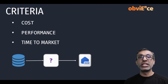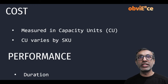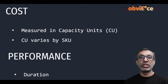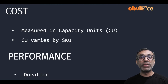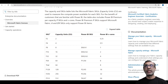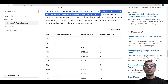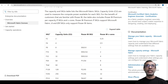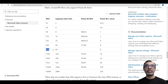When you try to benchmark or evaluate any product, you look at a few key criteria: cost, performance, and time to market. In the world of Microsoft Fabric, cost is measured in capacity units, and capacity units vary by SKU. For example, P1 which is F64 might be different compared to F4 and so forth. Performance is measured in terms of duration — how long a job or activity takes. Microsoft says capacity units measure the compute power available for each SKU. For instance, Trial or F64 or P1 has 64 capacity units.